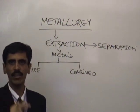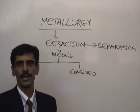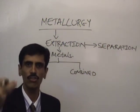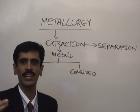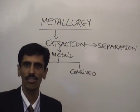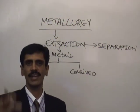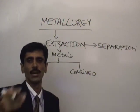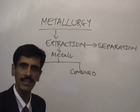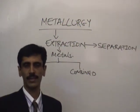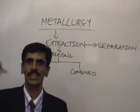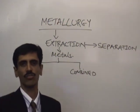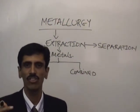State number two, we call it the combined state, which means it is chemically associated. When a metal is chemically associated, its association is obviously going to be with non-metals — say for example oxides, sulfides, sulfates, nitrates — all these are negative radicals. And metals, being positive, have a tendency to combine with them. So that is the difference between a free state and a combined state. In free state, the association is physical; whereas in combined state, the association is chemical.